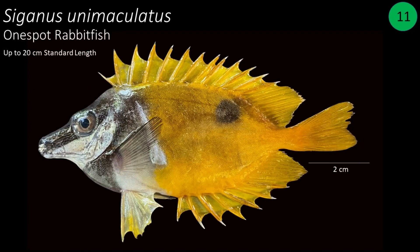Number 11: Siganus unimaculatus, commonly called one-spot rabbitfish. It can grow up to 20 centimeters in standard length and can be easily identified by the presence of a blackish spot posteriorly on the upper side of the body.